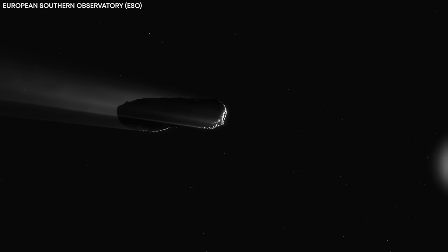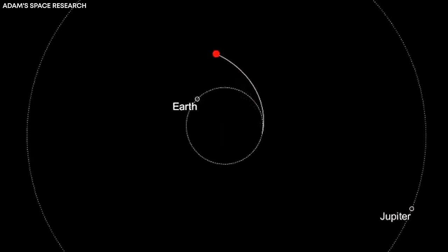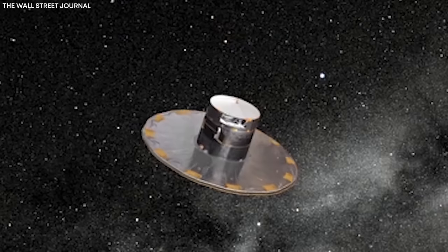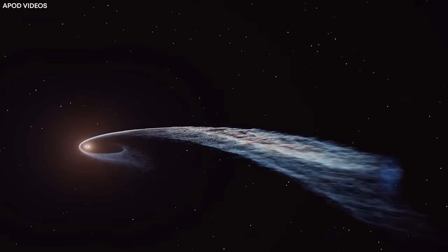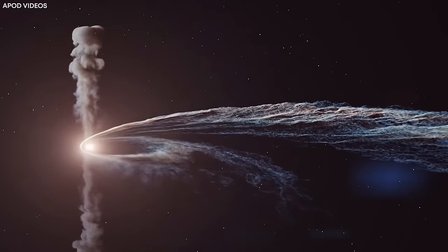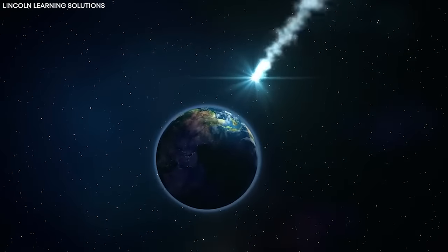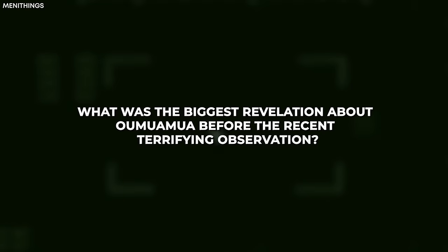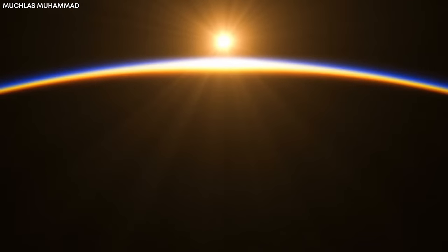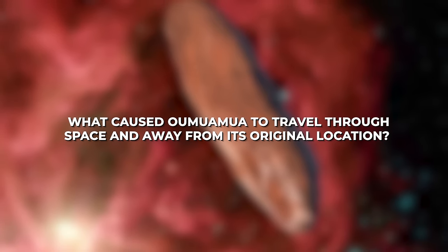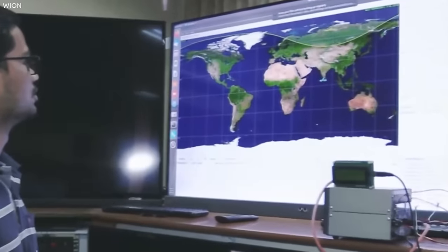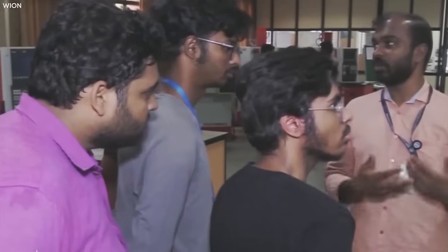The quest to uncover Oumuamua's true origin continues, with the hope that future releases of Gaia data will provide more information about this cosmic riddle. Additional data from Gaia will allow astronomers to refine their search for the celestial traveler's birthplace. No matter where it came from, the big question remains. What caused Oumuamua to travel through space and away from its original location? Scientists have put forward a few possibilities to explain its swift journey.